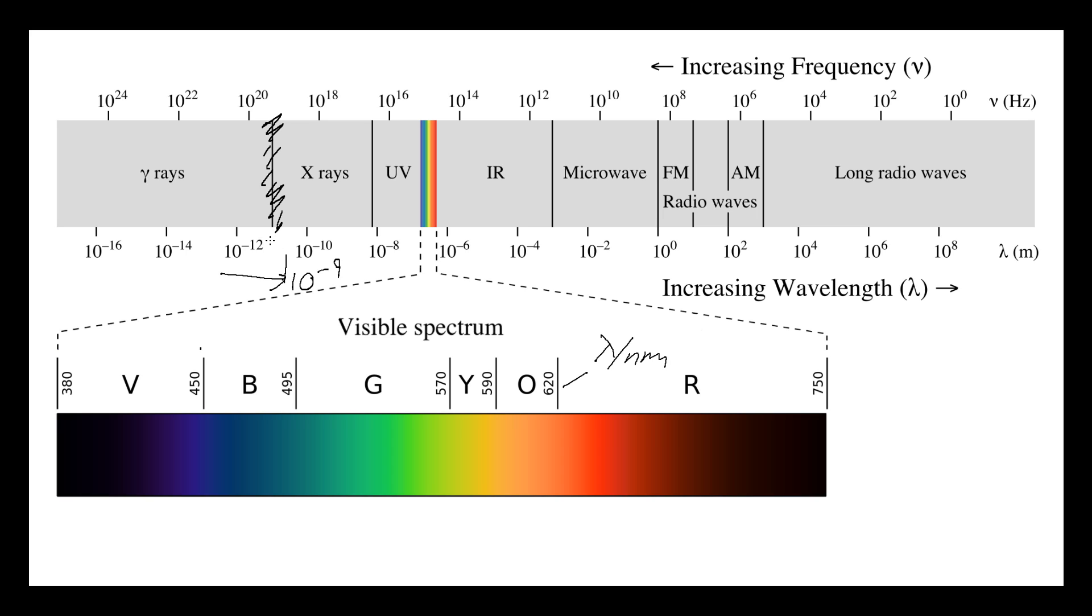Whereas the x-rays we tend to say start at about 10 to the 12. So there's this sort of overlapping region here where sometimes we call them x-rays, sometimes we call them gamma rays, and that's common throughout the rest of it. So that's the boundary between the gamma rays and the x-rays.